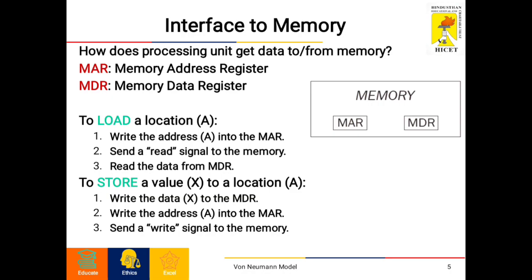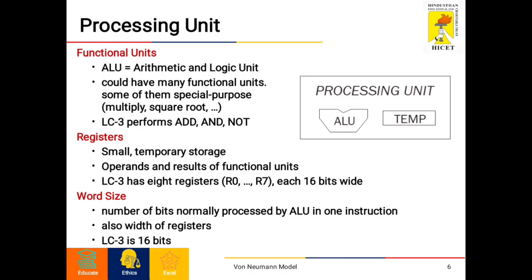To store a value X to a location A, write the data X to the MDR, write the address A into the MAR, then send a write signal to the memory. The processing unit first consists of functional units such as the ALU (arithmetic logic unit), which could have many functional units for operations like addition, subtraction, logical operations, etc., as seen before.